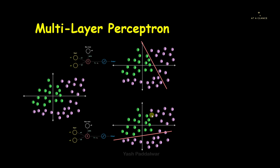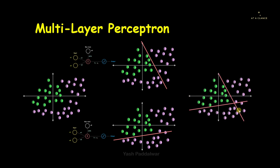Multi-layer perceptron uses more than one perceptron for classifying non-linearly separable data. If we somehow combine the outputs of these two perceptron algorithms and create a single classifier, it can separate the green circles from the pink circles. By combining the outputs of these two perceptrons we can generate a classifier that separates non-linearly separable data.